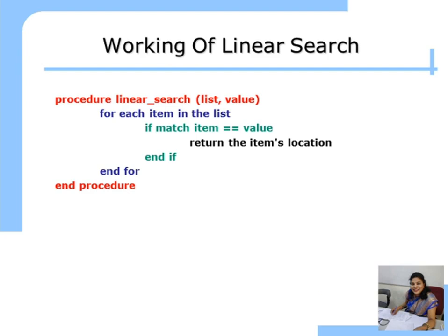Now let us understand the working of Linear Search. This is the pseudocode for Linear Search. We input the list (array) and the number to be searched (value) into the function. For each element in the list, we compare the element with the value to be searched. If we find a match, we return the element's location and the search is successful. Otherwise, we go to the next comparison. We repeat this procedure till the end of the list. If no match is found by the end, we output that the search is unsuccessful.